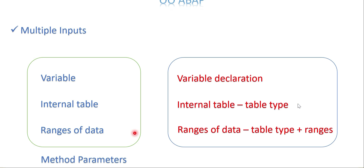For the declaration: if it is a variable, just a variable declaration, or you can hard-code the values. If it is an internal table, in the method parameter you give a reference — if it's a simple type, use type C or any data element name, but if it is an internal table, you have to create a table type and give that as a reference in your declaration. If it's ranges or select options data, you also create a table type and then convert it to a ranges table type.